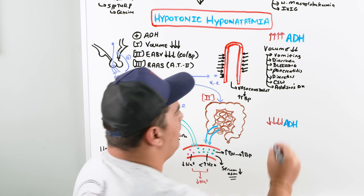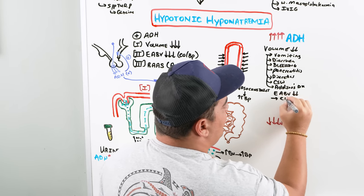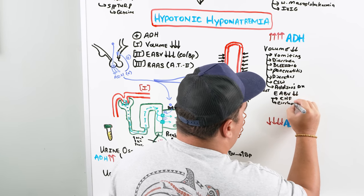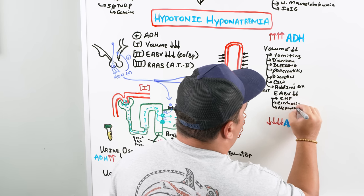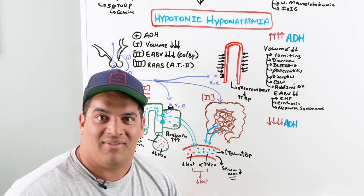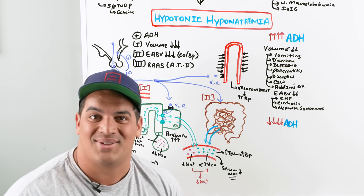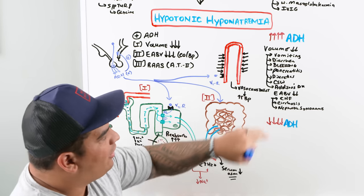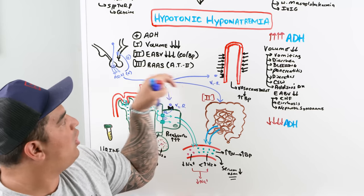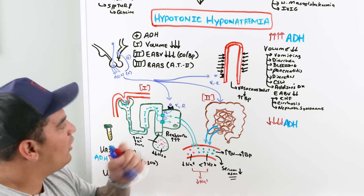Causes of low effective arterial blood volume include CHF (heart not pumping well), cirrhosis, and nephrotic syndrome. In these diseases, a lack of albumin causes water to leak from the vasculature into tissue spaces — so the true intravascular volume is lower even though total body water may be up. There is also one more trigger where ADH is turned on due to inappropriate ADH production — we'll discuss that shortly.